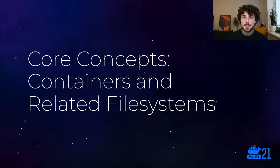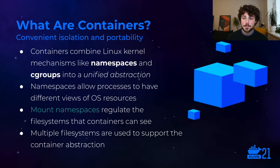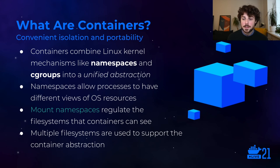We'll start with the core concepts — containers and the relevant file systems. Just taking it far back for a second: what are containers? They're a portability and isolation mechanism, but concretely they're just a collection of lower-level isolation mechanisms from the Linux kernel. In particular, things like cgroups that control memory and CPU usage, and then what are called namespaces, which create isolated views of different OS resources. So you have network namespaces, IPC namespaces, and the one we're looking at today is called a mount namespace, which controls the file systems that are available to a process. You can mount multiple file systems within a mount namespace.